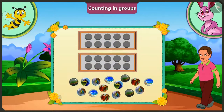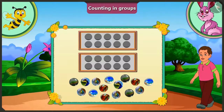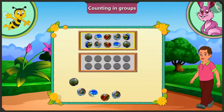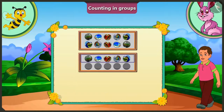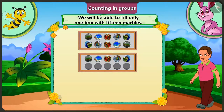Now look, there are fifteen marbles here. So how many such boxes can we fill with fifteen marbles? In one box we will fill five and five — ten marbles. And in the second box, we will fill only five marbles. This is why it will not be completely full. So with fifteen marbles, we can completely fill one box.